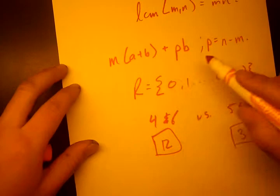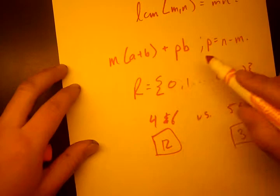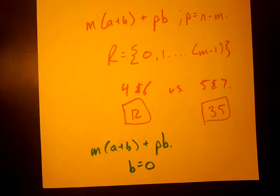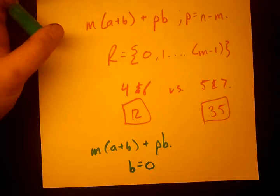So this poses a big problem for us. Why? Because that means that our cycle of remainders restarts too early. So let's see what I mean by that. So remember with 5 and 7, we had our M times A plus B plus PB. So if B equals 0, then the remainder is obviously 0, right? But when is the remainder 0 next?